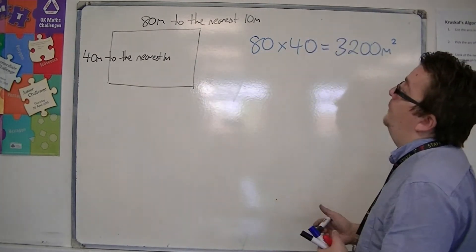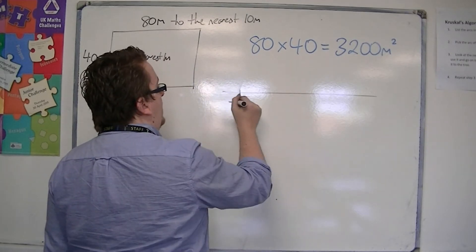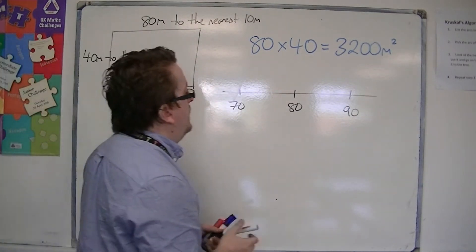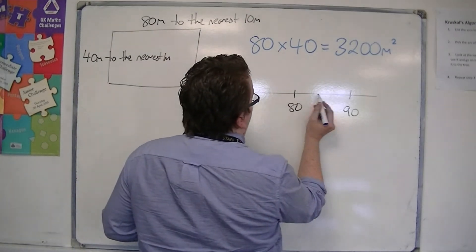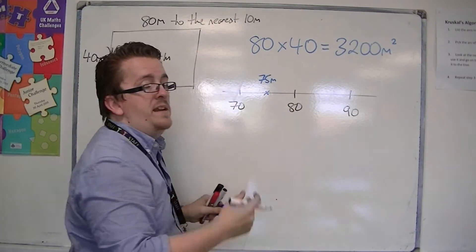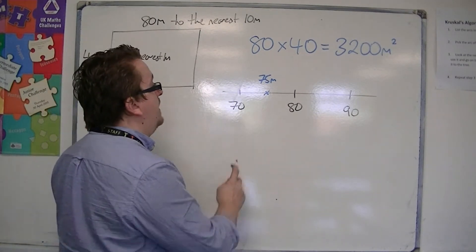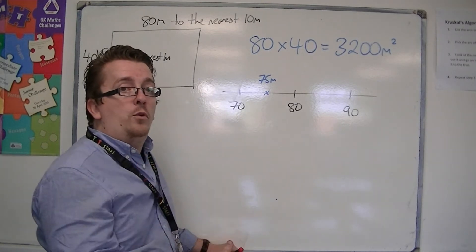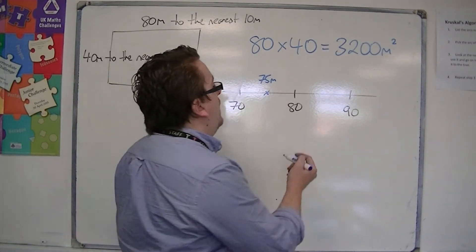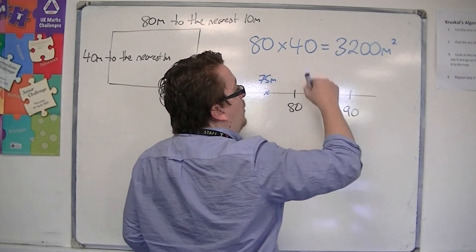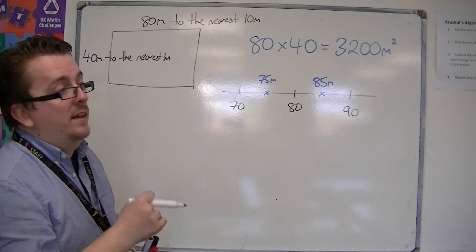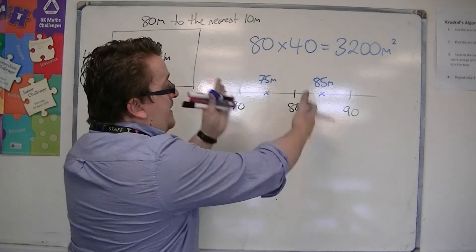So the 80 metres to the nearest 10 metres — on your number line, let's say we had 70, 80, 90 metres. To the nearest 10 metres it's 80. However, it could be anywhere between 75 metres, because 75 metres rounds to 80 metres to the nearest 10. Anything below that — 74.9 or 74.6 — is going to be closer to 70. The lowest it could possibly be is 75. The highest it could possibly be is 84.999... repeating, which is as close to 85 metres as you could possibly get. So we could say, approximately, it's between 75 and 85 metres.